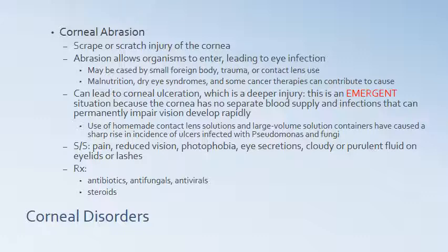Signs and symptoms of corneal ulceration are severe pain, reduced vision, photophobia, eye secretions, and cloudy or purulent fluid on the eyelids or eyelashes. Treatment will be antibiotics, antifungals, or antivirals depending on the causation. They may do a culture to determine what is appropriate, but will start the patient on an antibiotic while awaiting results, then adjust based on culture findings. Steroids are also used to decrease inflammation.